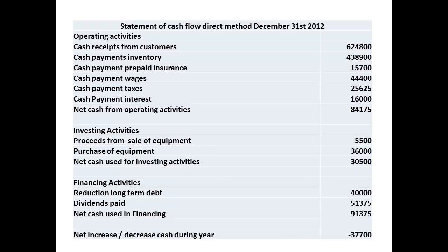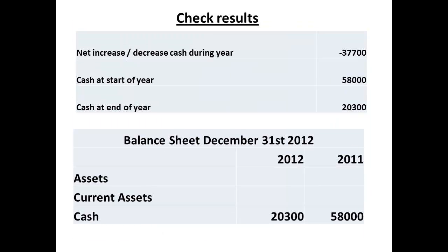The three sections can now be combined to give a cash flow statement. There is an inflow of cash from operating activity, and we subtract the two outflows. The net result is a decrease in cash of $37,700 during the year. We can carry out a simple check: the difference of $37,700 must represent the change in current assets of cash during the year. From the balance sheet, we see a decrease in cash — subtracting $20,300 from $58,000 gives $37,700, which agrees to the cash flow statement.